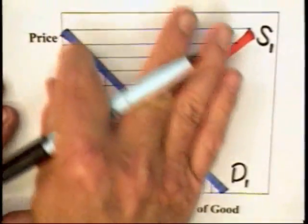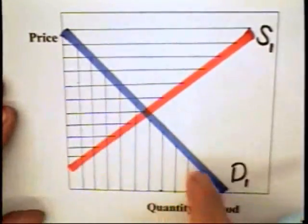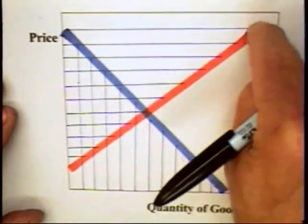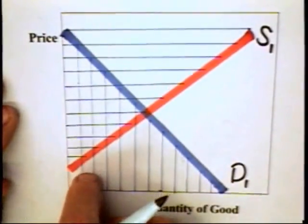So, we have this set of price-quantity combinations that are acceptable to consumers. We have this set of price-quantity combinations acceptable to producers.